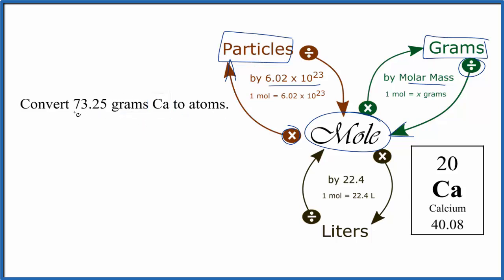So we take our 73.25 grams. We're going to divide that by the molar mass, in this case because it's just calcium, an atom, it'll be the atomic mass of 40.08, and the units for that are grams per mole. So when we do the division, grams on top and bottom, they cancel out, we end up with 1.83 moles of calcium atoms.